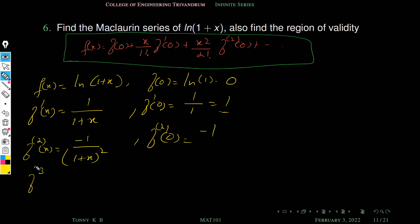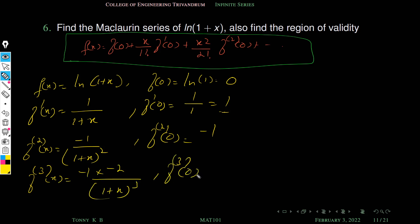To find a pattern, we compute one more derivative. f triple-dash of x equals minus 1 times minus 2 over (1+x)^3, so f triple-dash of 0 equals minus 1 times minus 2. Now the pattern is clear. Then f^(4)(0) equals minus 1 times minus 2 times minus 3.